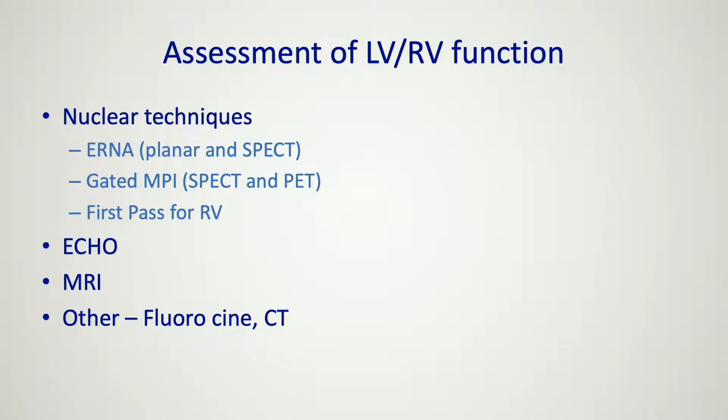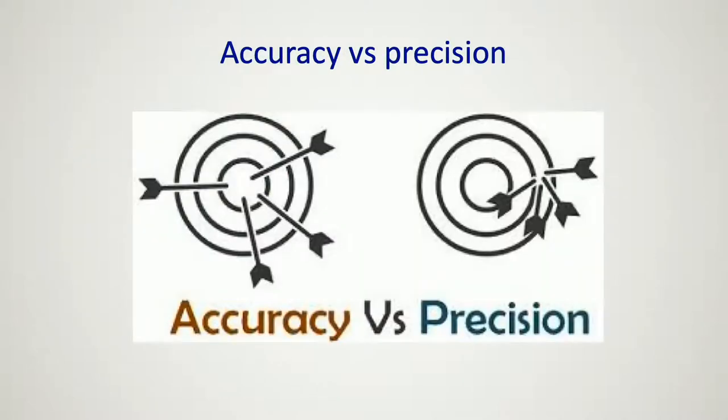When we discuss LV and RV function, the biggest and most important concept to tackle is accuracy versus precision. I'm going to be talking about assessment of myocardial blood flow later, and one of the funny aspects is you could be very precise and be precisely wrong every single time. That's a very important concept.